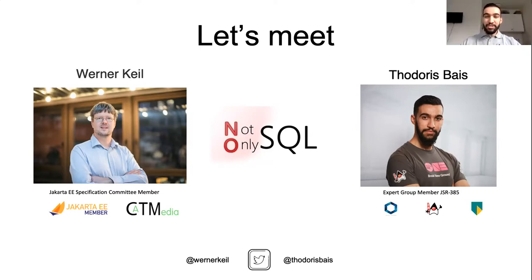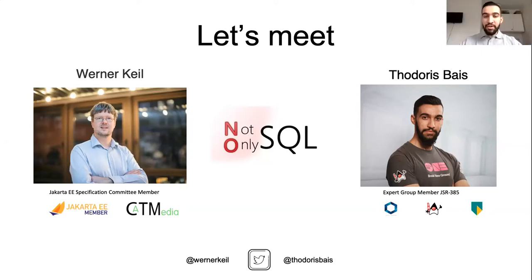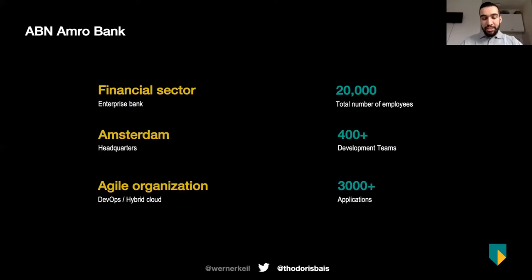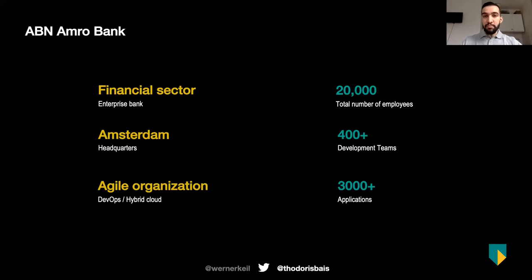A short intro about myself: my name is Favoris Bias — or Doris Bias in English — Greek by origin, living and working in the Netherlands for the last five years. I'm the founder and leader of the Utrecht Java User Group and I'm working as a Scrum Master at ABN AMRO Bank. Just one marketing slide: we are hiring, and as we're slowly migrating towards a sustainable, future-proof bank, we do have some openings. Feel free to have a look at our website or drop me a line.